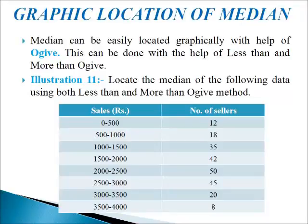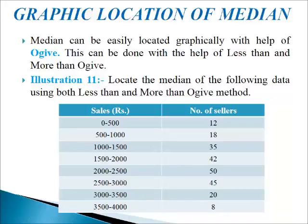Next, we come to the graphical location of median. Median can be easily located graphically with the help of an Ogive, that is a cumulative frequency curve, using less than and more than Ogives. In the less than Ogive, frequencies are added starting from the upper limit of the first class interval and marked against upper limits. We find the n by 2 term, mark it on the Y axis, draw a perpendicular to intersect the Ogive at point E, then drop a perpendicular to the X axis at point F, which indicates the median.